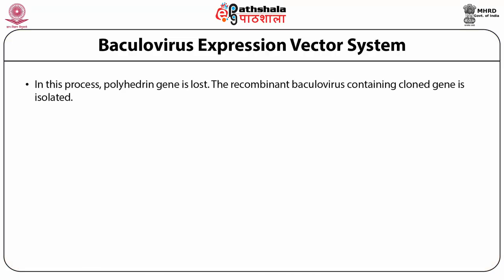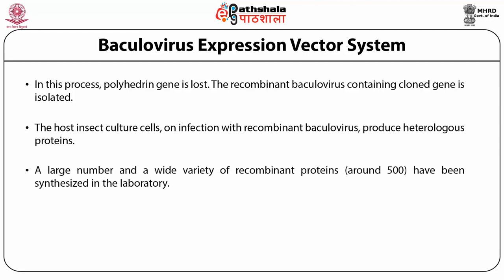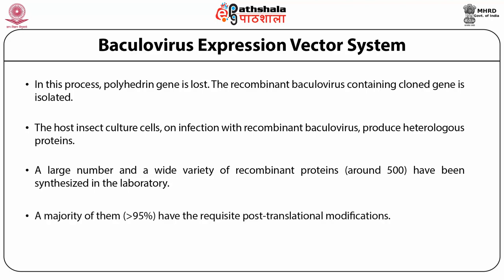In this process, the polyhedrin gene is lost. The recombinant baculovirus containing the cloned gene is isolated. The host insect culture cells on infection with recombinant baculovirus produce heterologous proteins. A large number and wide variety of recombinant proteins have been synthesized in laboratories throughout the world, and a majority of them have the requisite post-translational modifications.